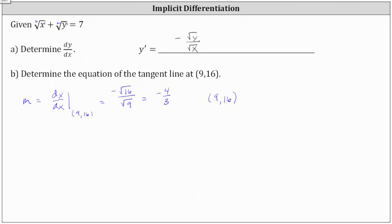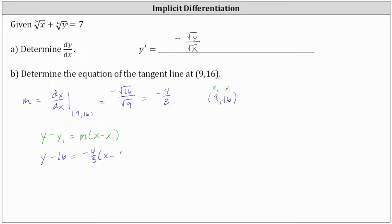We know the slope of the tangent line and that it passes through the point 9 comma 16, so we can determine the equation of the tangent line. Let's first find the equation in point slope form: y minus y1 equals m times the quantity x minus x1, where m equals negative 4 thirds, x1 equals 9, and y1 equals 16. This gives us y minus 16 equals negative 4 thirds times the quantity x minus 9.